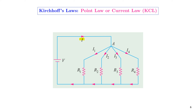The total current flowing in the circuit is I. When the total current I reaches node A, it splits into I1, I2, I3, and I4, which pass through resistors R1, R2, R3, and R4. When these currents reach the second node B, all these currents get added up and the total current I flows back to the voltage source. So points A and B are known as nodes.